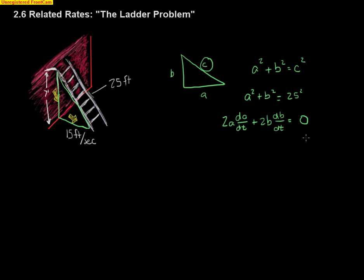Algebraically, I can divide the entire equation by 2. So that means I can actually cancel out the 2s. So I will have a times da dt plus b db dt equals 0. So, again, here is your rate of 15 feet per second. That represents, because we have a as the lower leg here, this right here is da dt.